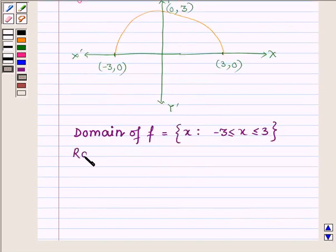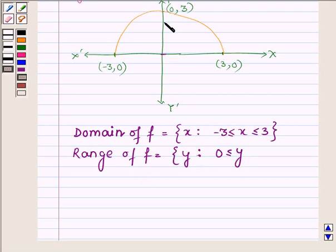Now let us write the range of f which will be the set of all those y such that y is from 0 and its maximum limit is up to 3. Or we can also say that y such that 0 is less than or equal to y is less than or equal to 3.